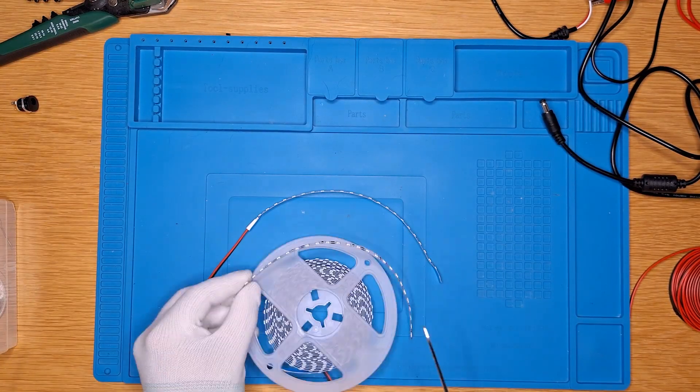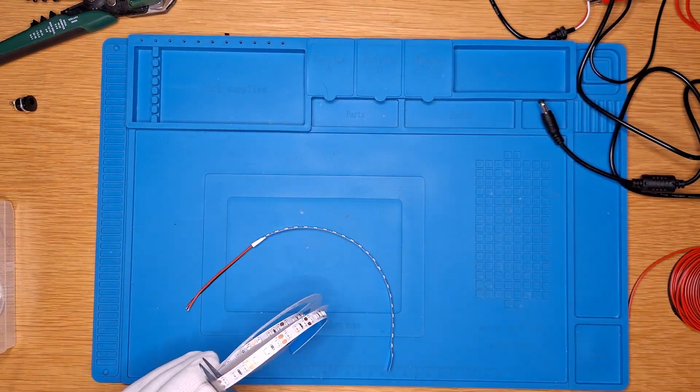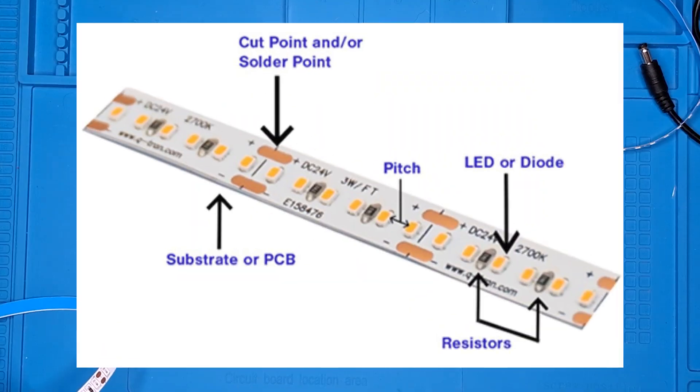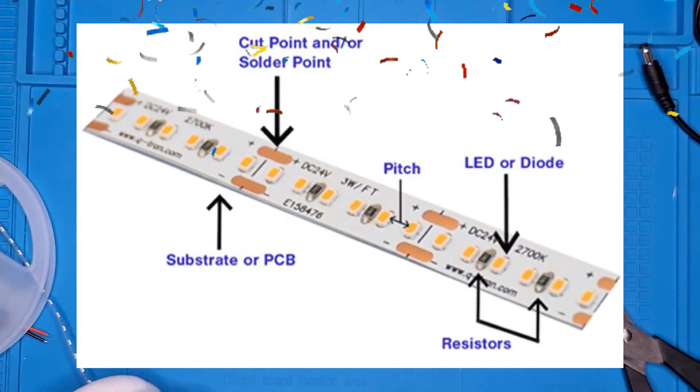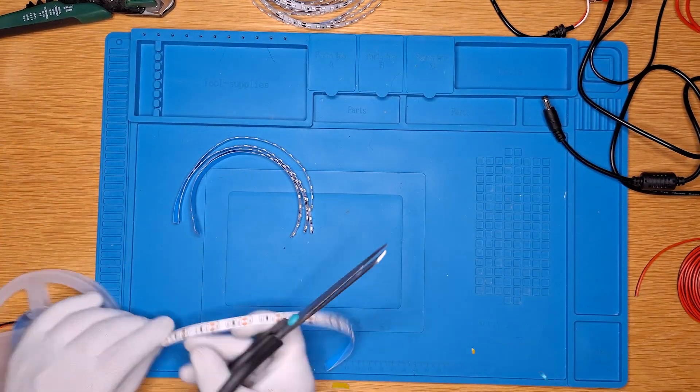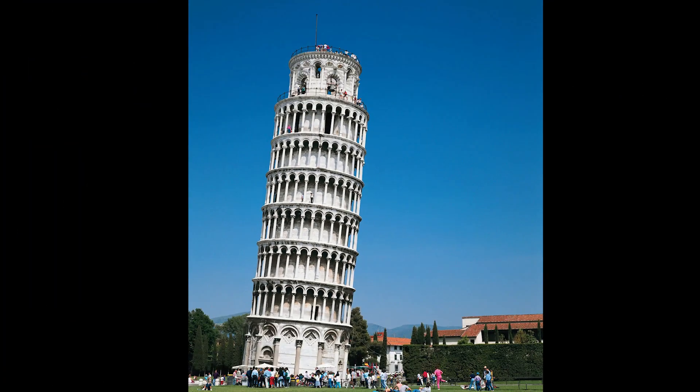Next up, cutting these UV LED strips to length. It's not rocket science, but it might as well be when you realize they have specific cut points. Mess it up and congratulations, you've made expensive confetti. Measure twice, cut once, and hope you left enough room for soldering. This is precision engineering, or close enough.